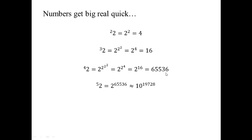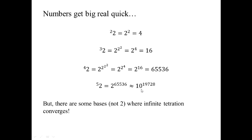Tetrating 2 five times gives 2 to that big number — not something you want to plug into a calculator. Just to give an order of magnitude, this is on the order of 10 to the 19,728, which is obviously a number beyond comprehension.